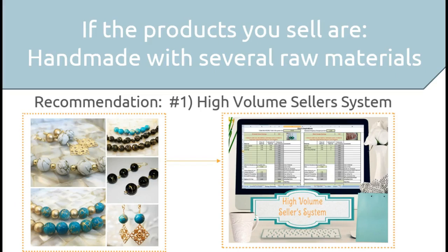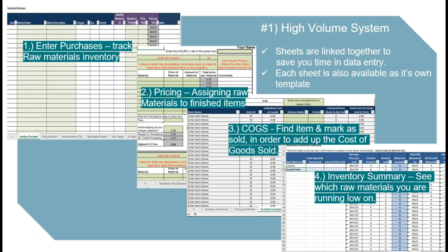With the first option, when you're selling a handmade item, this is really for when you want to track the raw materials that go into the handmade item. It consists of several pages — four pages all linked together to save you time with data entry. The first page is a simple inventory page where you enter all your purchases of raw materials. The next page is where you enter your finished items and assign the raw materials to them — it's also a pricing worksheet page.